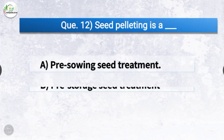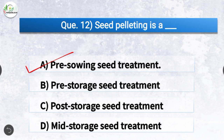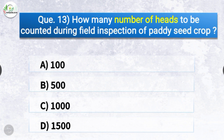Question number twelve: Seed pelleting is a — the options are pre-sowing seed treatment, pre-storage seed treatment, post-storage seed treatment, or mid-storage seed treatment. The correct answer is option A — pre-sowing seed treatment. Seed pelleting is the process of adding inert materials to seed for increasing their weight, size, and shape, and this improves plantability allowing for precise metering, spacing, and depth of seed in the field.